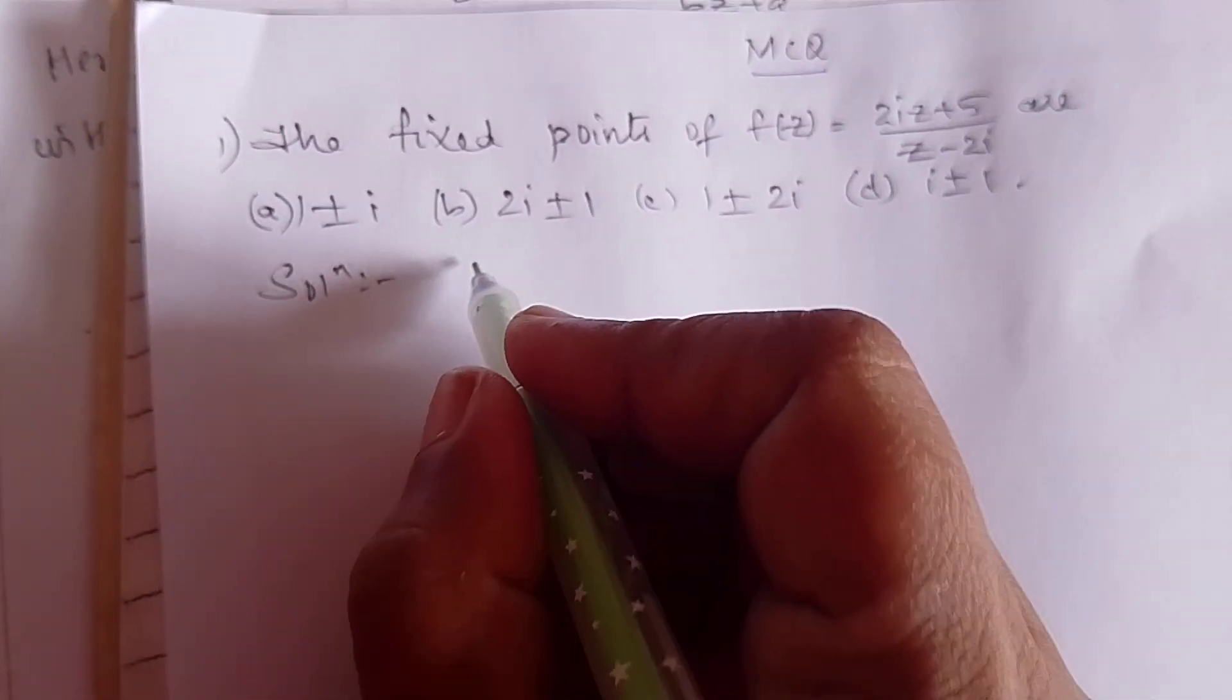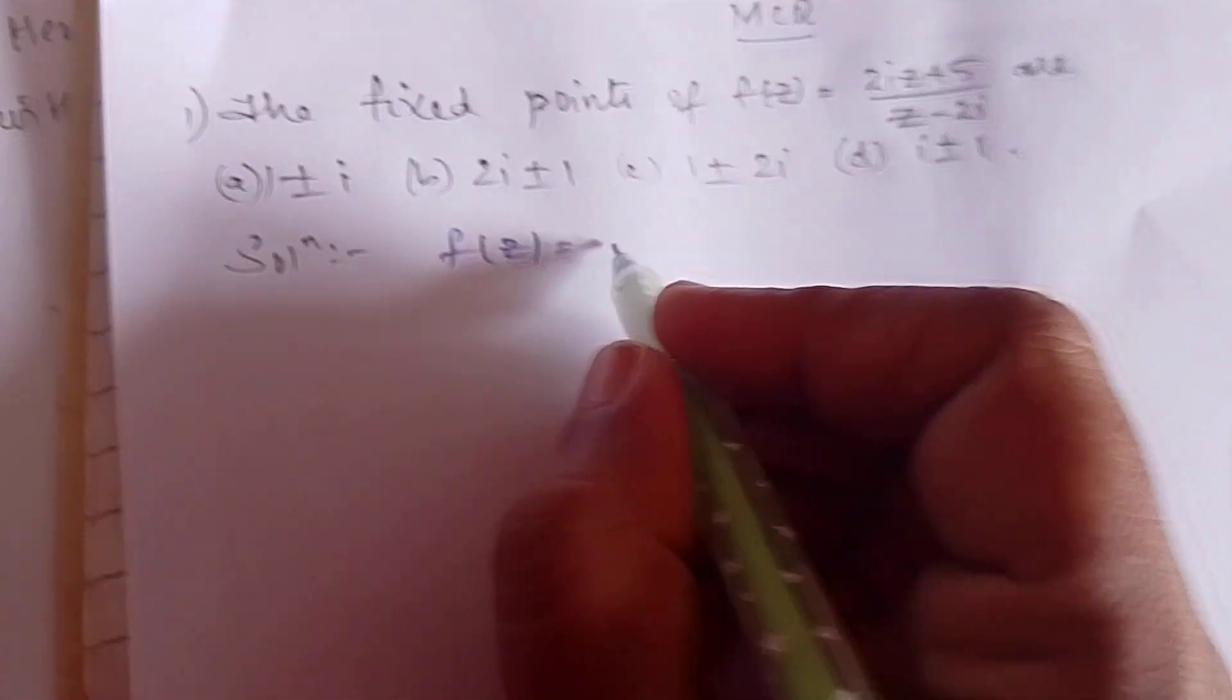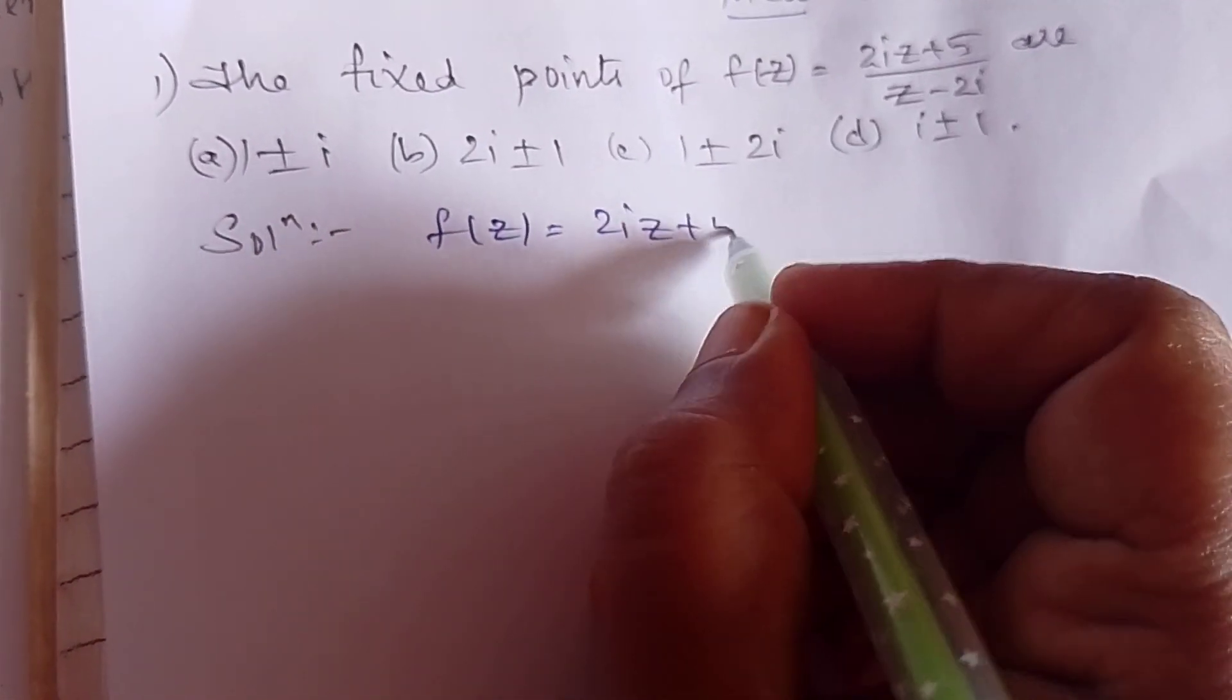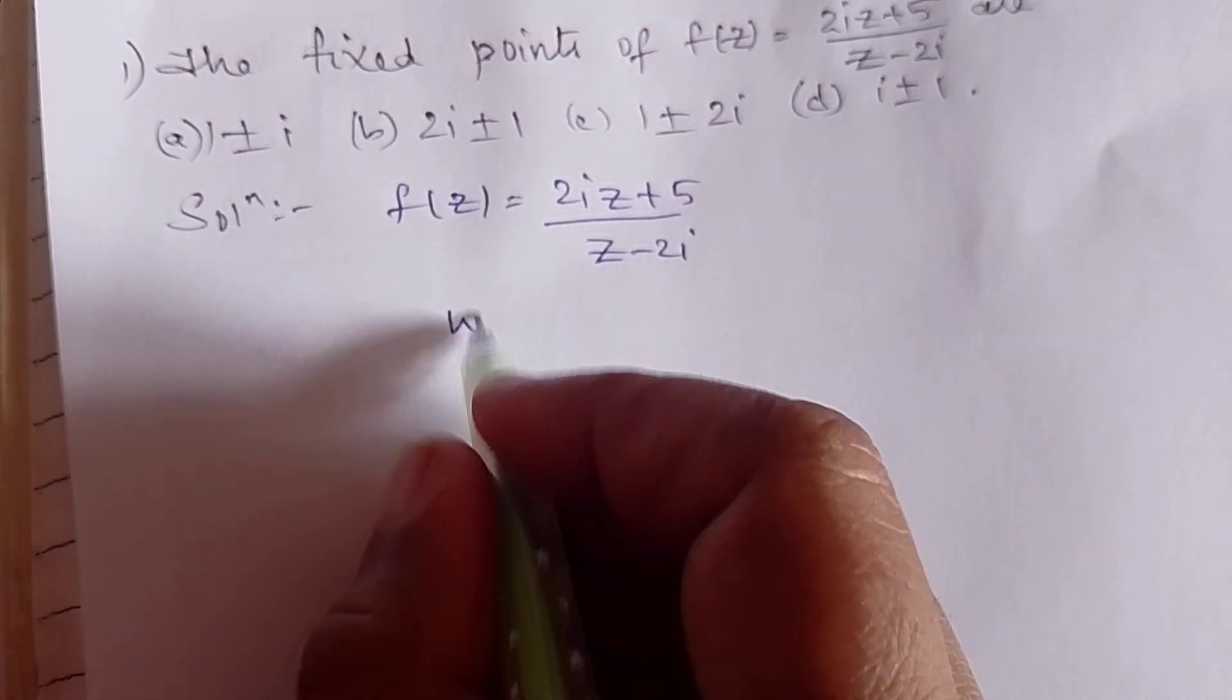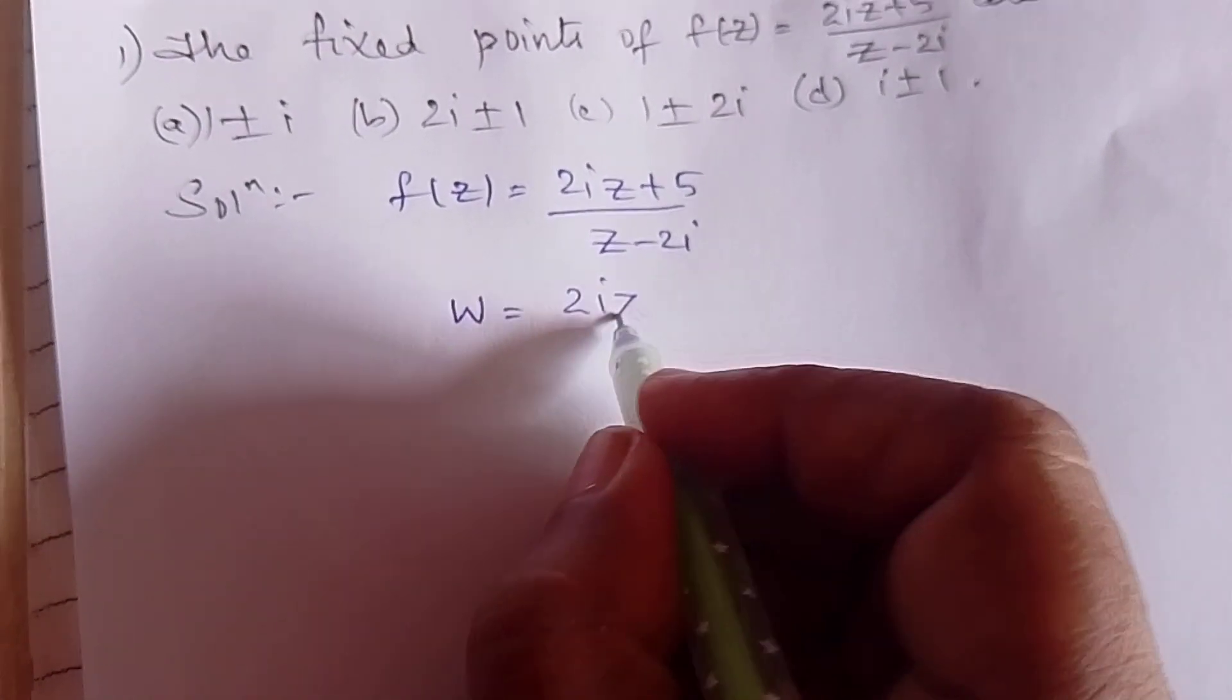Now we will solve this problem. Here, we are given f(z) = (2iz + 5)/(z - 2i). So f(z) is nothing but w.